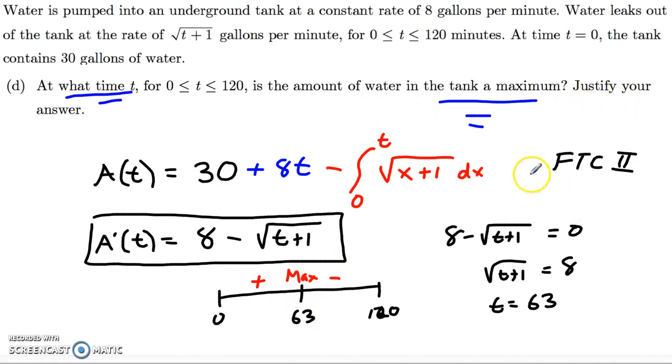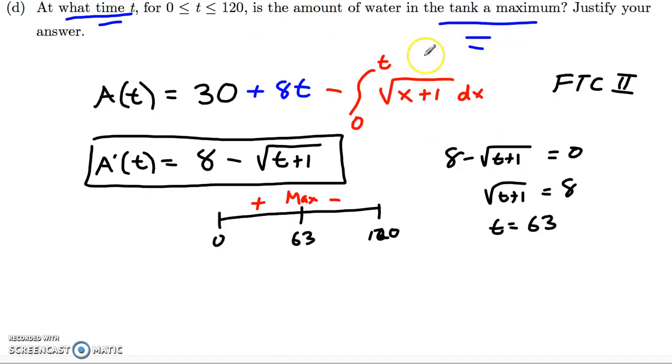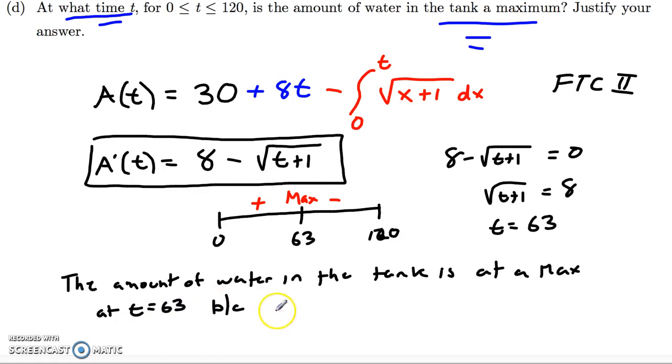Justify our answer. Well, let's make sure that we do that carefully. I'm going to see something to the effect of, so the amount of water in the tank is at a maximum at t equals 63 because A prime of t is greater than 0 when t is in between 0 and 63. And A of t is less than 0 for t between 63 and 120. And so there you go.